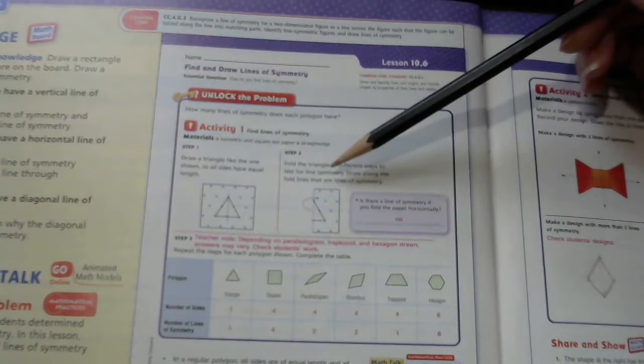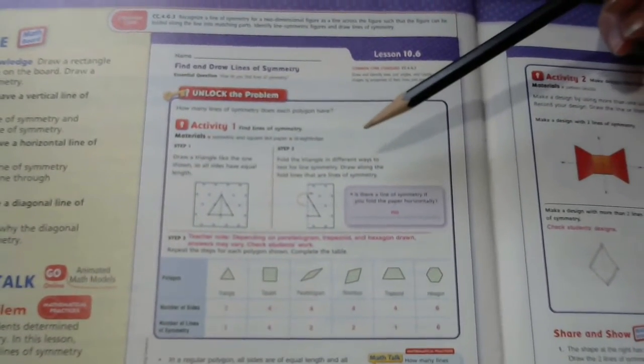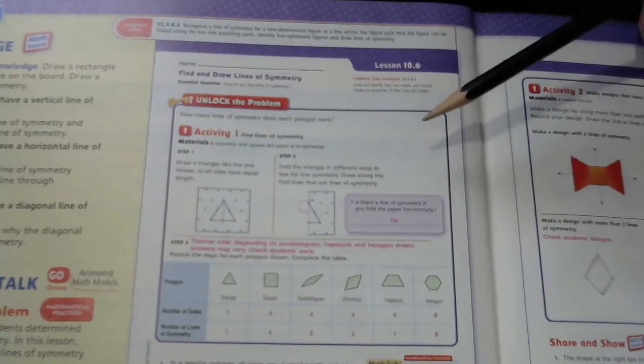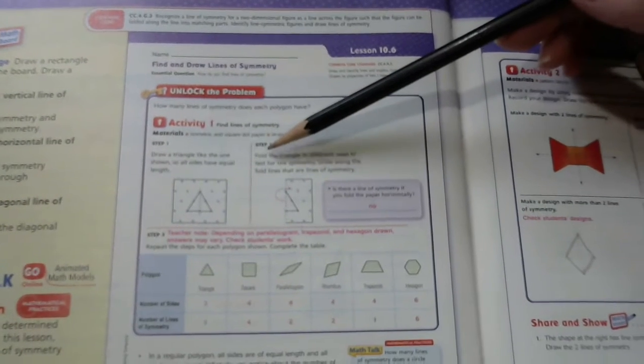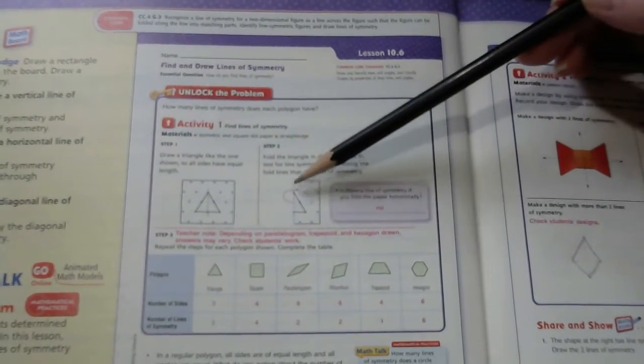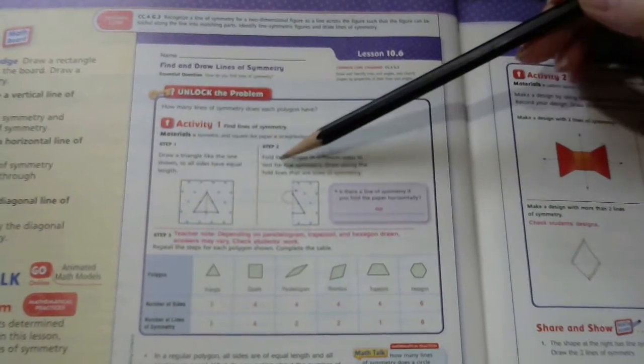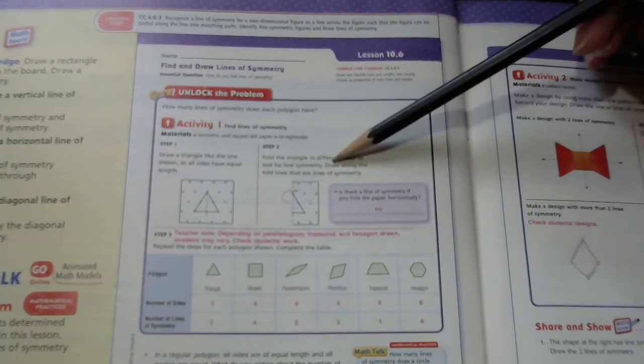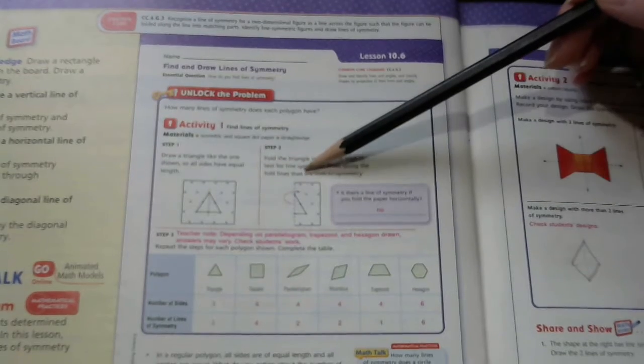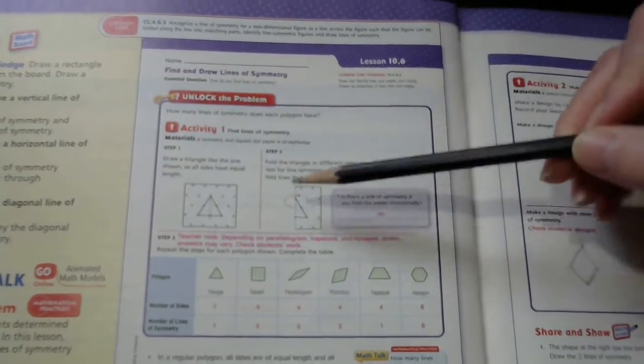Now, if you have these materials at home, you may use design blocks or building blocks. If not, you may just draw them like I did. You may draw the triangle on a piece of paper and fold the triangle in different ways to test for a line of symmetry.